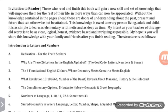Introduction to Letters and Numbers. Dedication for the Truth Seekers. Why are there 26 letters in the English alphabet? The God Code. Letters, Numbers, and Bones. The Four Foundational English Ciphers. Where Geometry meets Gematria meets English.